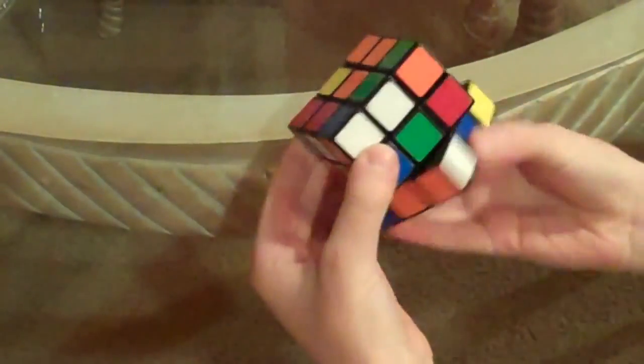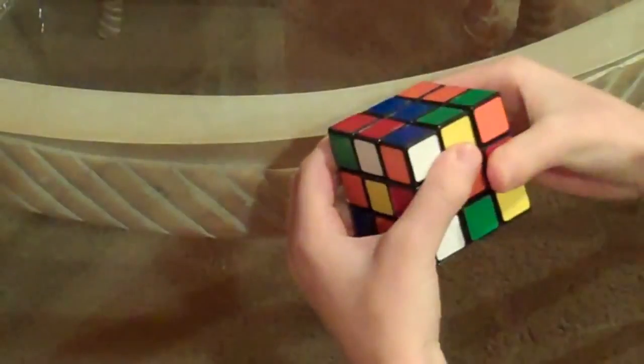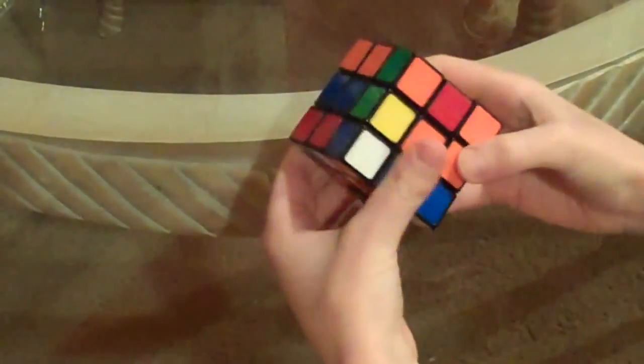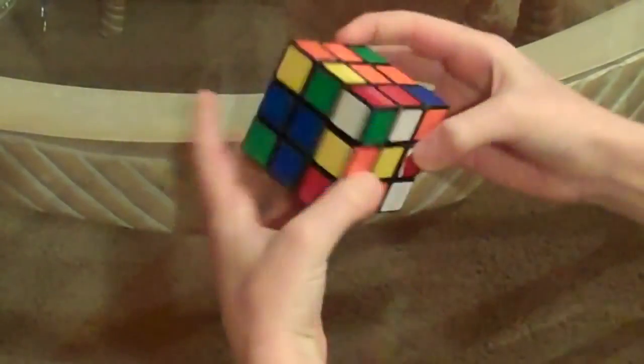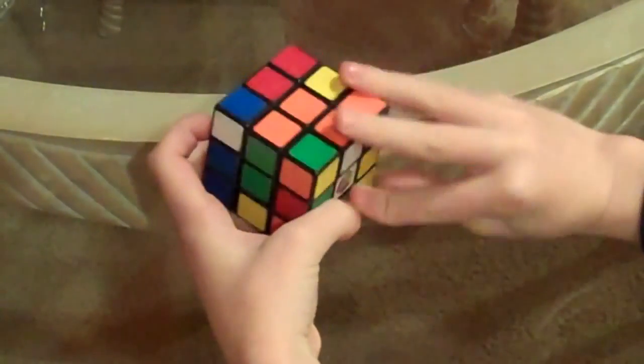So what we want to do is we want to go this way, move that one down, middle down, and then this one up like that. And then you got green correct and white correct.